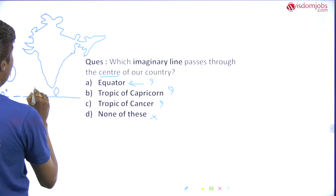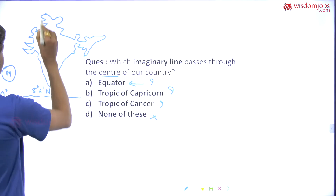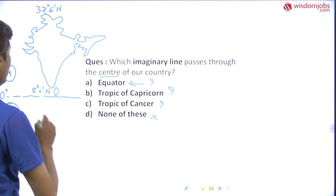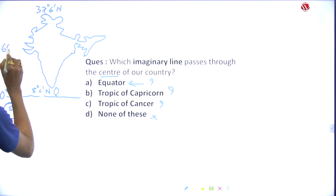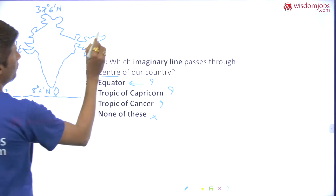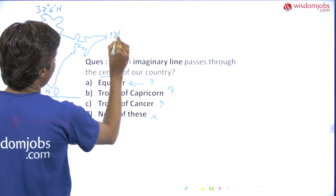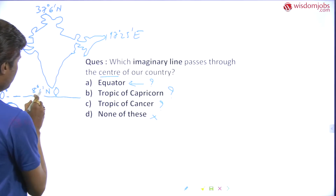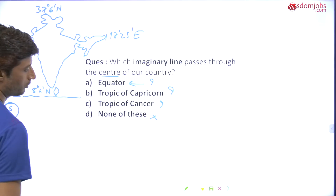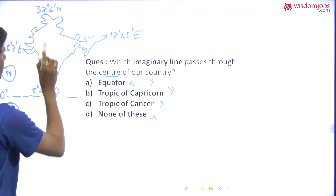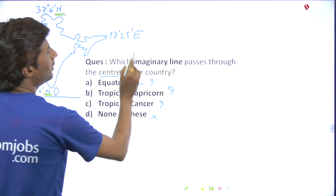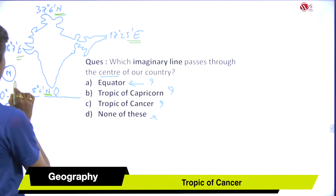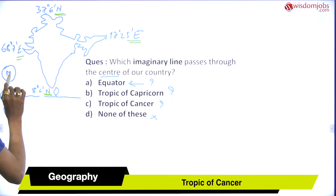The latitudinal extent of India is 8 degrees 4 minutes north to 37 degrees 6 minutes north, and the longitudinal extent is 68 degrees 7 minutes east to 97 degrees 25 minutes east. This tells us that India lies in the Northern Hemisphere and also in the Eastern Hemisphere. So equator is not our answer.